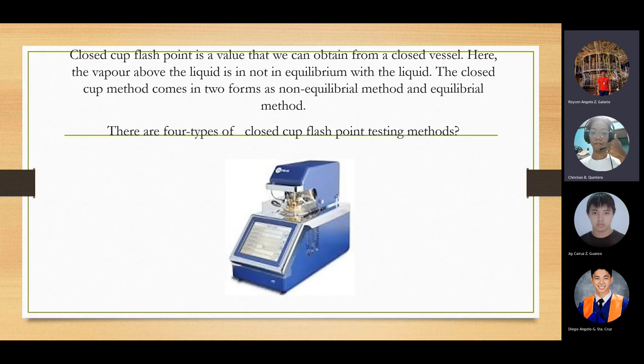Closed cup flashpoint is a value you obtain from a closed method. Here, the vapor above the liquid is not in equilibrium with the liquid. The closed cup methods come in two forms: non-equilibrium method and equilibrium method. There are four types of closed cup flashpoint testing methods.